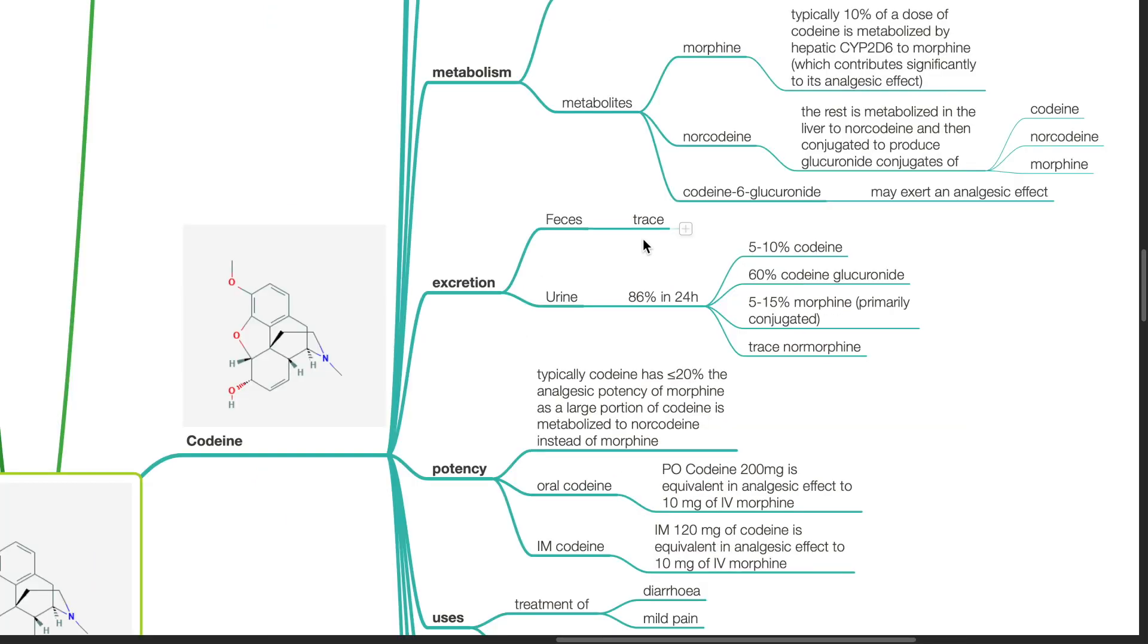Excretion. Trace amounts of metabolites of codeine are found in the feces. 86% of codeine metabolites are found in the urine at 24 hours.